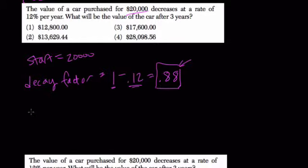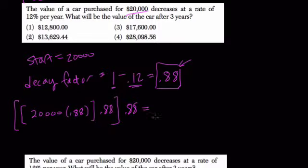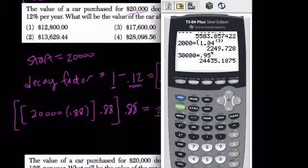So what's nice about this is you could do 20,000 times 0.88 for one year, and then times that by 0.88 again, and then times that by 0.88 a third time for three years. Or you could compound this quickly by doing 20,000 times 0.88 to the third power. And this is generally how these exponential functions work, where the first number is your starting value, this is your decay factor, and this exponent is always the time required for growth.